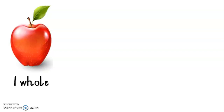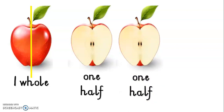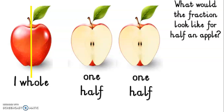Let's try one more. One whole apple. Divide it in half. Do you see my yellow line through the apple? Now we're going to cut the apple in half. What is it going to look like? One half of the apple, and here's the second half of the apple. How many halves are there? Very good — there are two halves. What would the fraction look like for half an apple? Good. Half — one over two. So remember, it's one whole apple made into a fraction of two halves, so it's one over two.